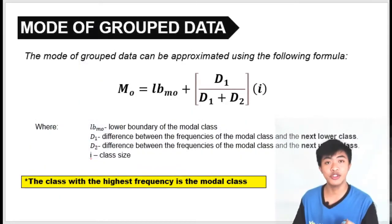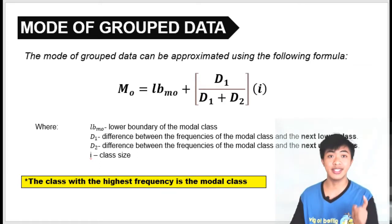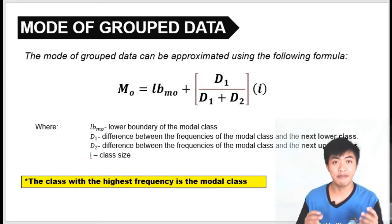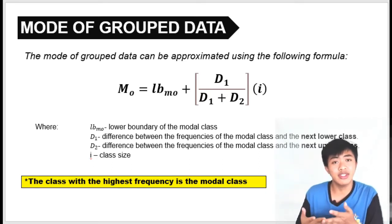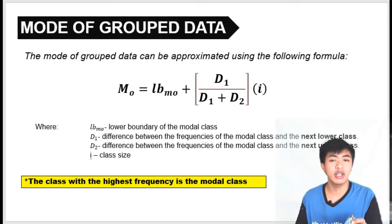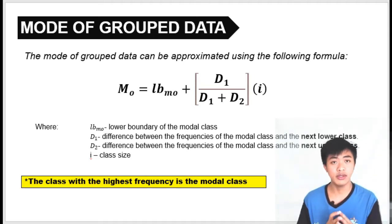Mode is the most frequently appearing value in the data set, or the value that appears most often in the data set. With ungrouped data, we can easily observe what the mode is. But when the data is in a frequency distribution table, we cannot easily pinpoint what number is the mode of the data set.